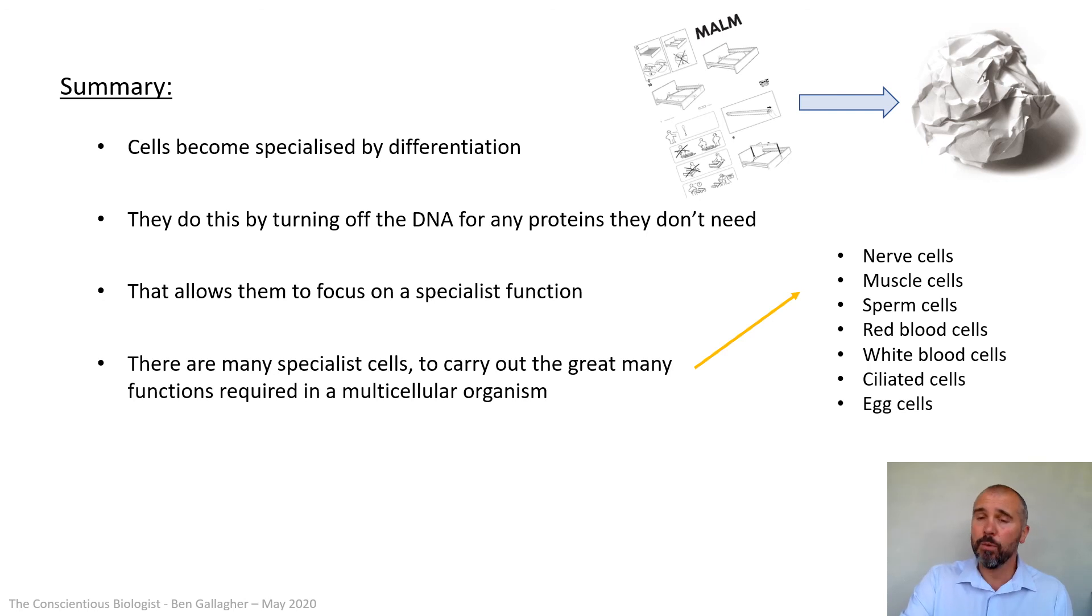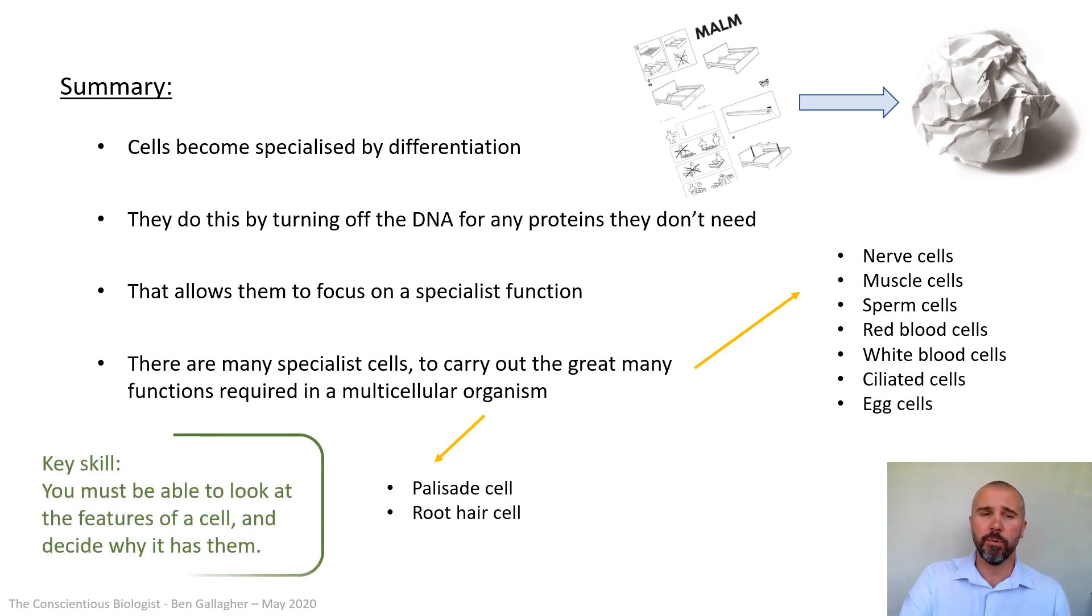For animal cells these are the key ones you need to know. So nerve cells, muscle cells, sperm cells, red blood cells, white blood cells, ciliated cells and egg cells. And for plant cells the key two really are just palisade cells and root hair cells. There are some other ones that come up in the course, phloem cells, xylem cells. There's a few other cells in the leaf, especially guard cells on the bottom of the leaf, but we'll get to those when they're relevant to the course. These really cover almost all of the examples that you need to know, but it's how they become specialized that's really really important.